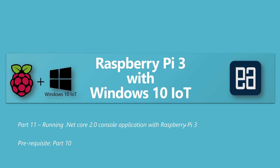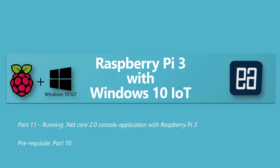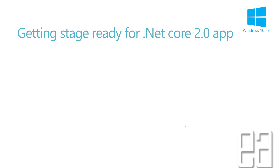Hi, my name is Karthik and I am from executeautomation.com. Welcome to part 11 of our Raspberry Pi 3 with Windows 10 IoT video series. In this video we'll be talking about running a .NET Core 2.0 console application with Raspberry Pi 3. Before watching this part, I would requisite you to watch part 10, since in that part we did the installation of Windows 10 IoT on Raspberry Pi 3.